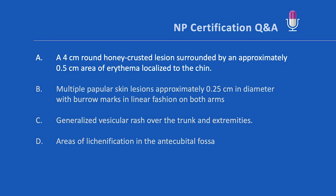Option D: areas of lichenification in the antecubital fossa. This is not correct — it describes the clinical presentation of eczema. The antecubital fossa bilaterally is one of the most common locations for eczema in a child of this age or older. The lesions often become lichenified in part because the areas are really itchy, so the child rubs them a lot, and that triggers lichenification.